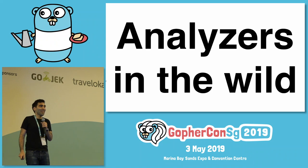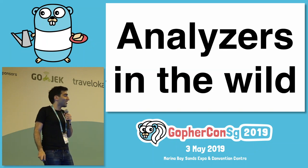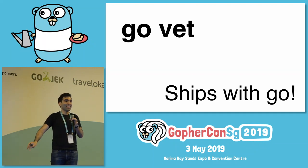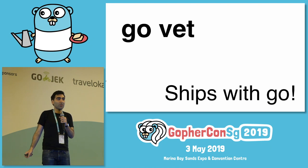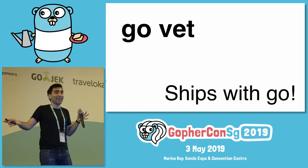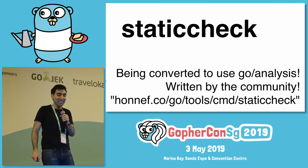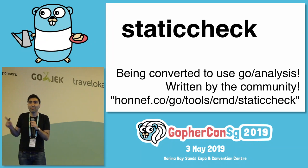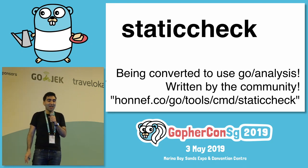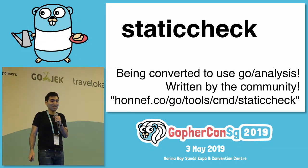I'm going to give you two examples of analyzers in the wild, in addition to the analyzers you saw in the previous talk. GoVet is great — it comes for free with Go. You can run it on your code and it'll find errors. We recently rewrote it to use the analysis framework, so now you also have a bunch of examples of how to use it. Staticcheck is a tool written by the community that's currently being converted to use GoAnalysis. It has a ton of analyses and will flag things that are probably errors in your code.